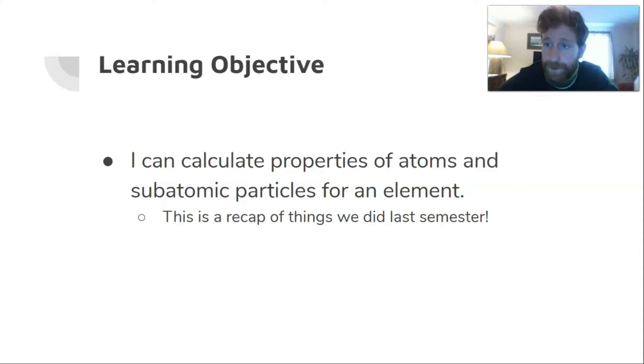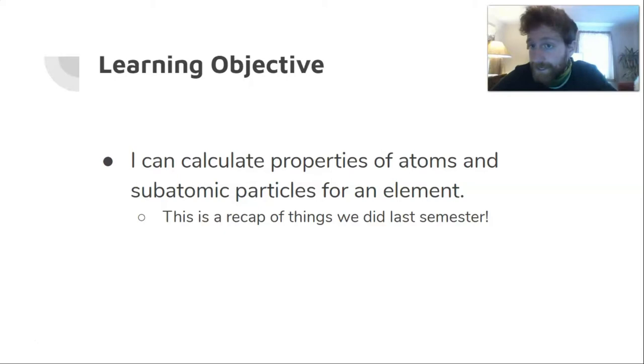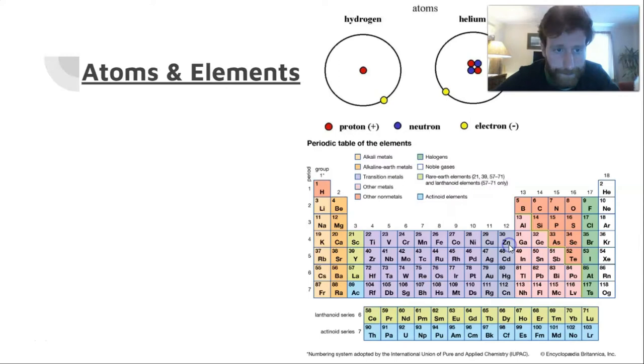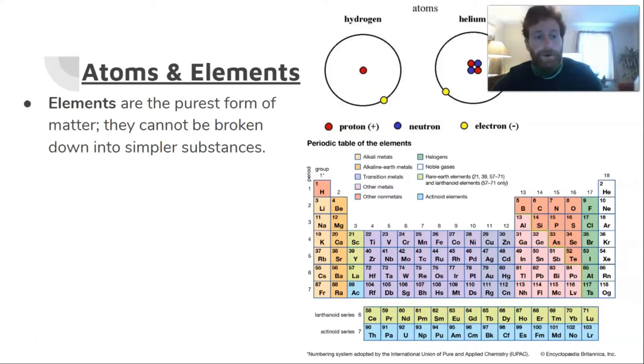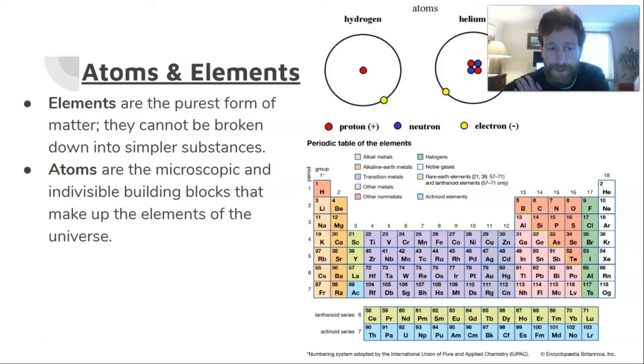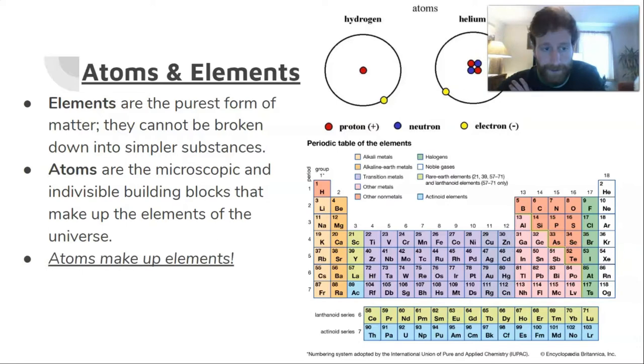First off, elements are the purest form of matter. They cannot be broken down into simpler substances. Atoms themselves are the microscopic and indivisible building blocks that make up the elements of the universe. We like to say that atoms make up elements. Atoms are the very small Legos of the universe. I say indivisible here—we can split atoms as seen in nuclear reactors, a process called fission, but it's very difficult to split atoms, so we do say they're indivisible mostly.